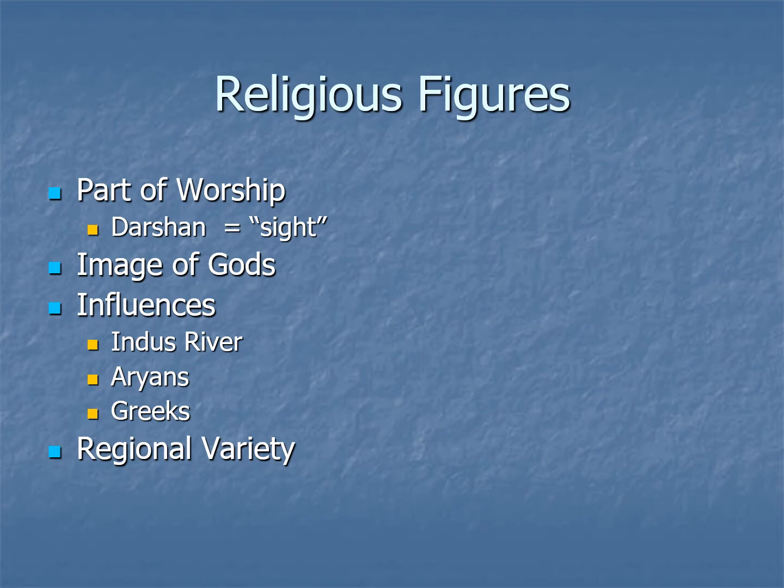Early art is going to be heavily influenced by religion, and even to the present day in India, because it is a very religious country and Hinduism plays a big role, religion is very foundational to art and architecture. One of the reasons why is that there are so many images of gods, and these idols are considered gods in themselves — the place where you worship them and where their presence is. One of the acts of worship is just to see the idol. Darshan is a word that means sight, but it's an act of worship — just catching a glimpse of one of these statues of gods is in fact worship.